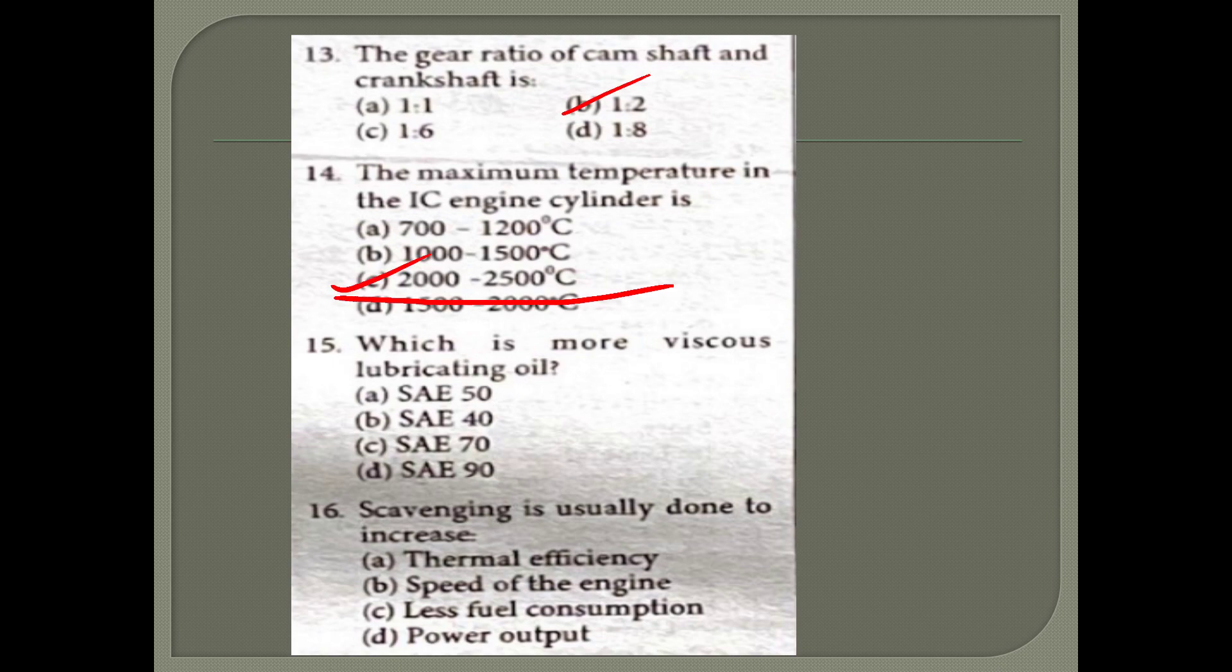15th question: Which is more viscous lubricating oil? The answer is option D - SAE 90. 16th question: Scavenging is usually done to increase power output.